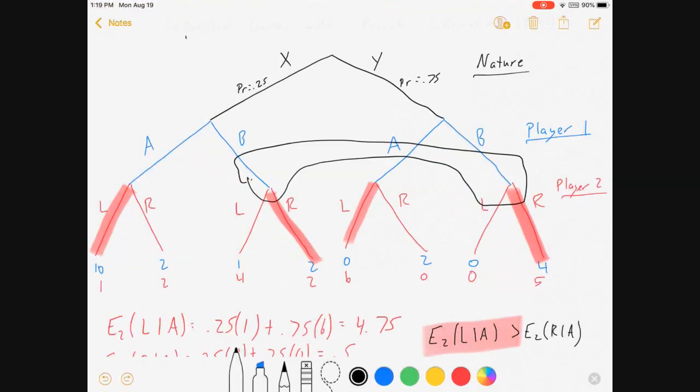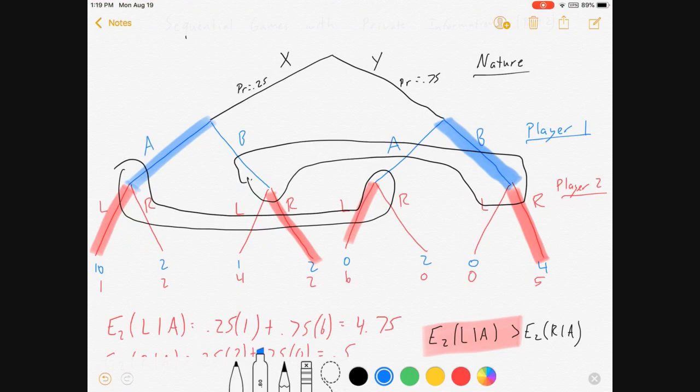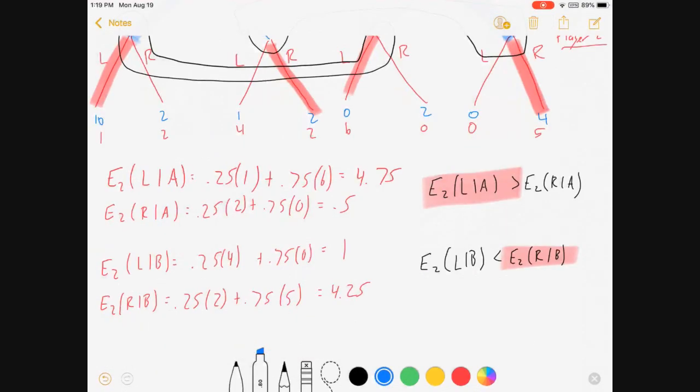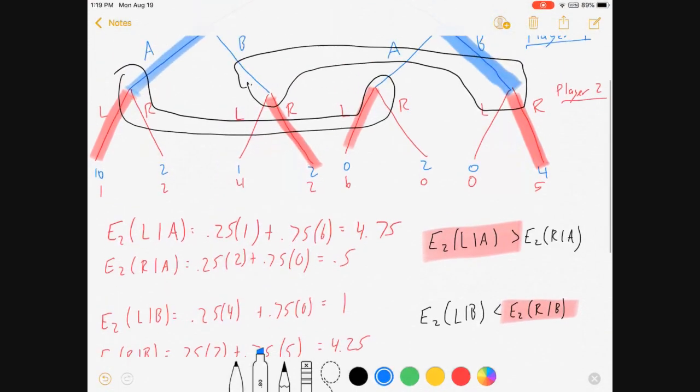Alright, now let me put these things back in here, just so that we can see the game the way it's supposed to look. And so what is our Bayesian Nash equilibrium? Well, our Bayesian Nash equilibrium is player one plays A if X and plays B if Y. And player two responds by playing L if they observe an A and by playing R if they observe a B. We got that by doing all of our expectation stuff.